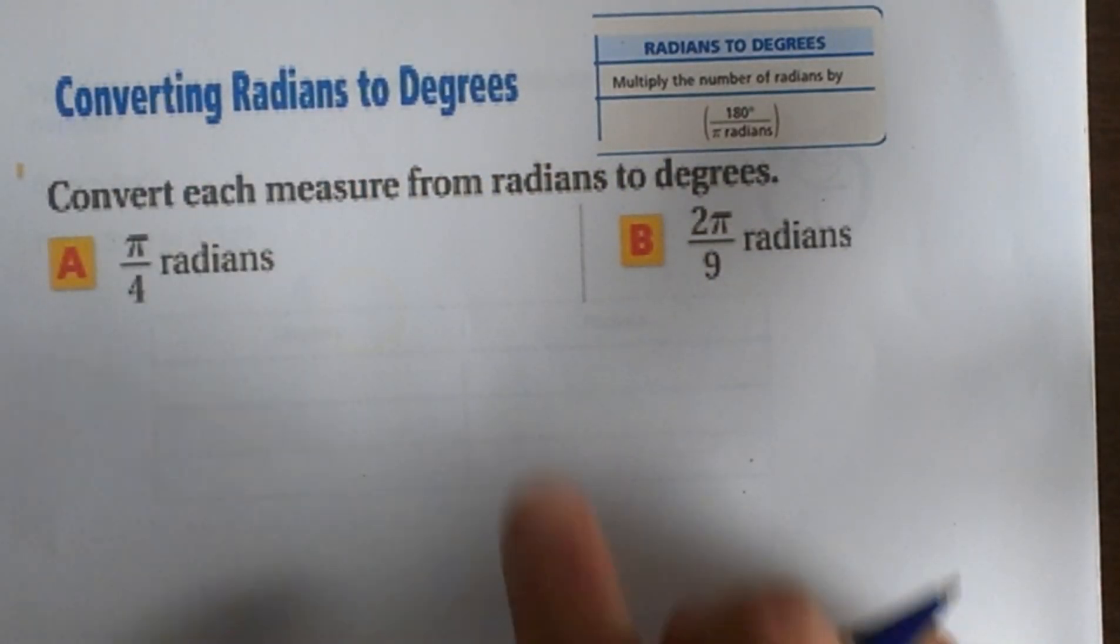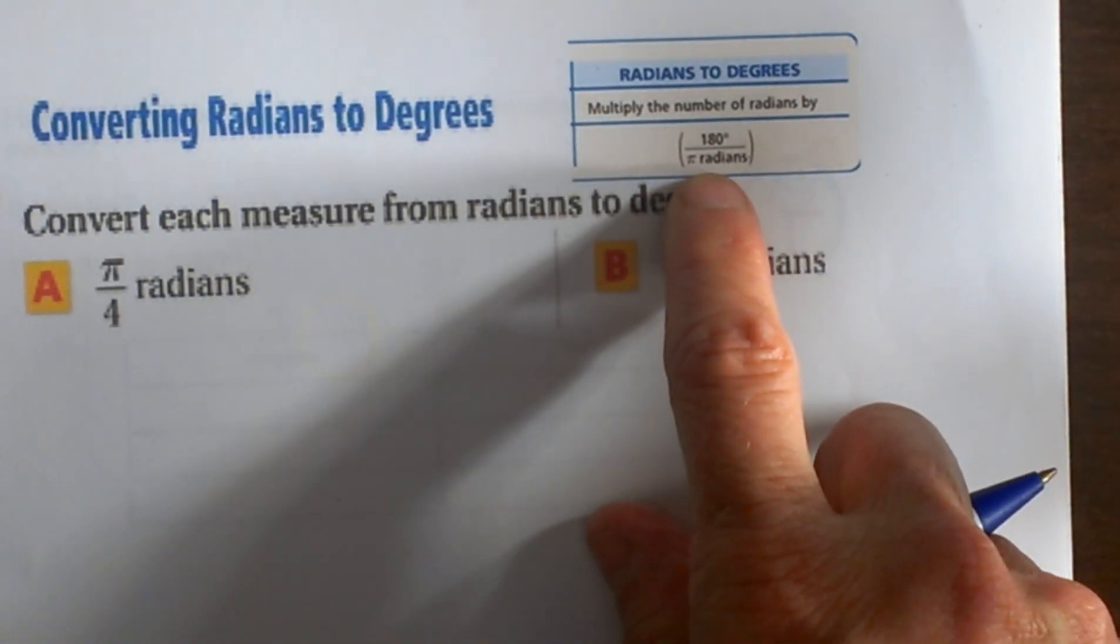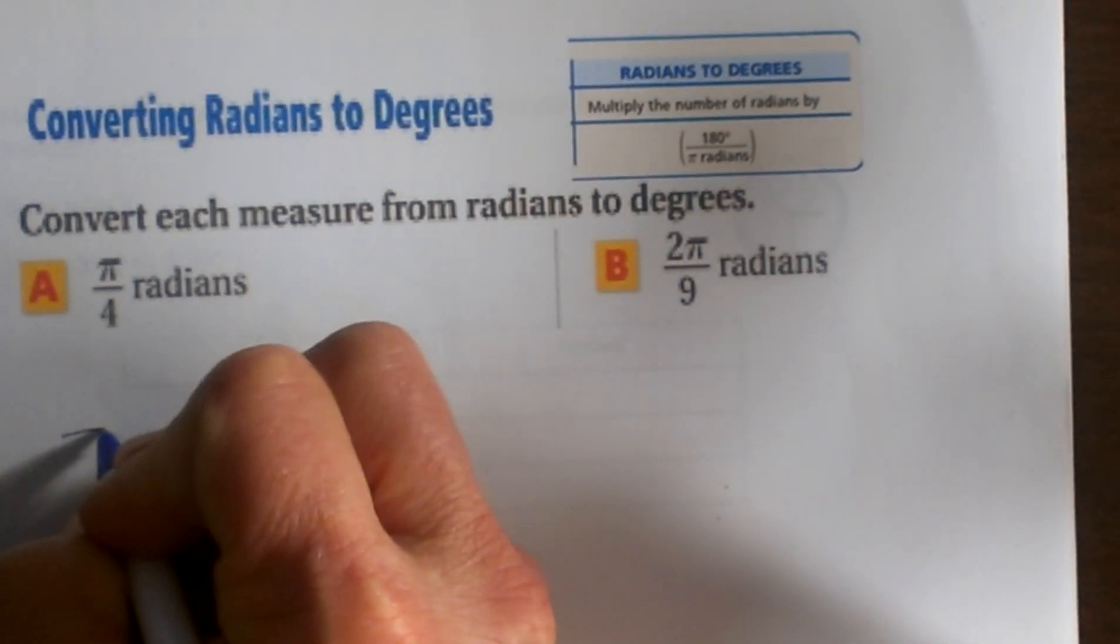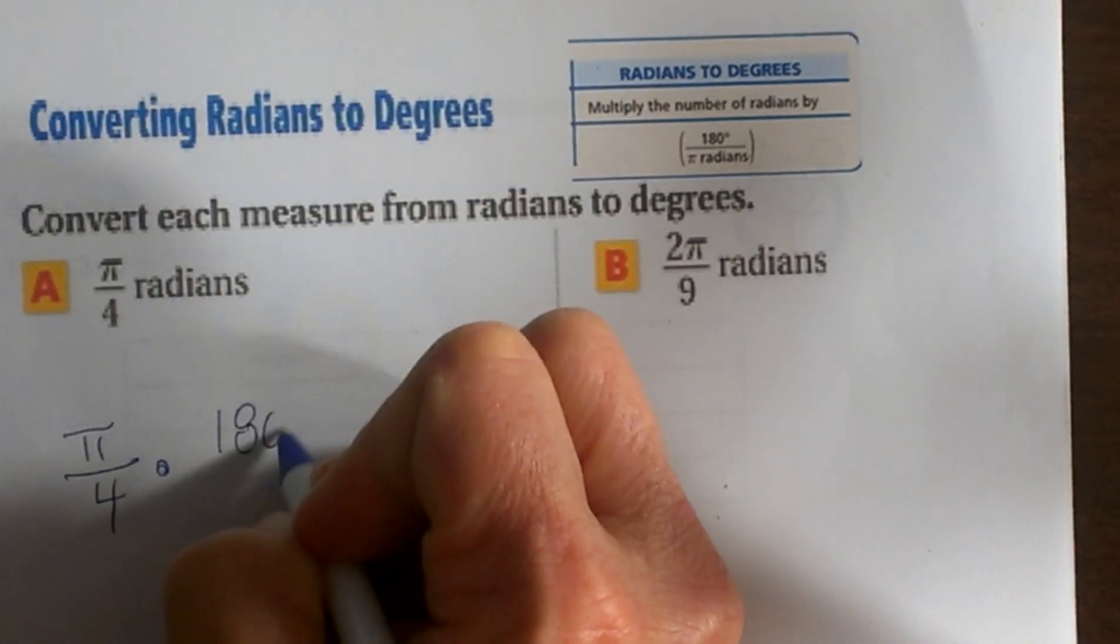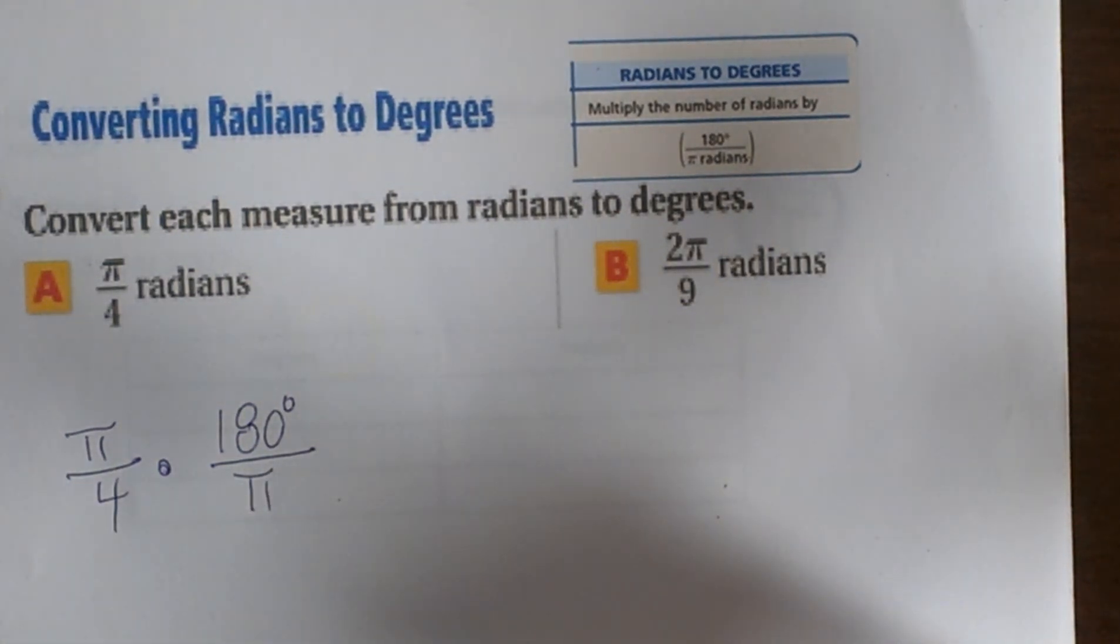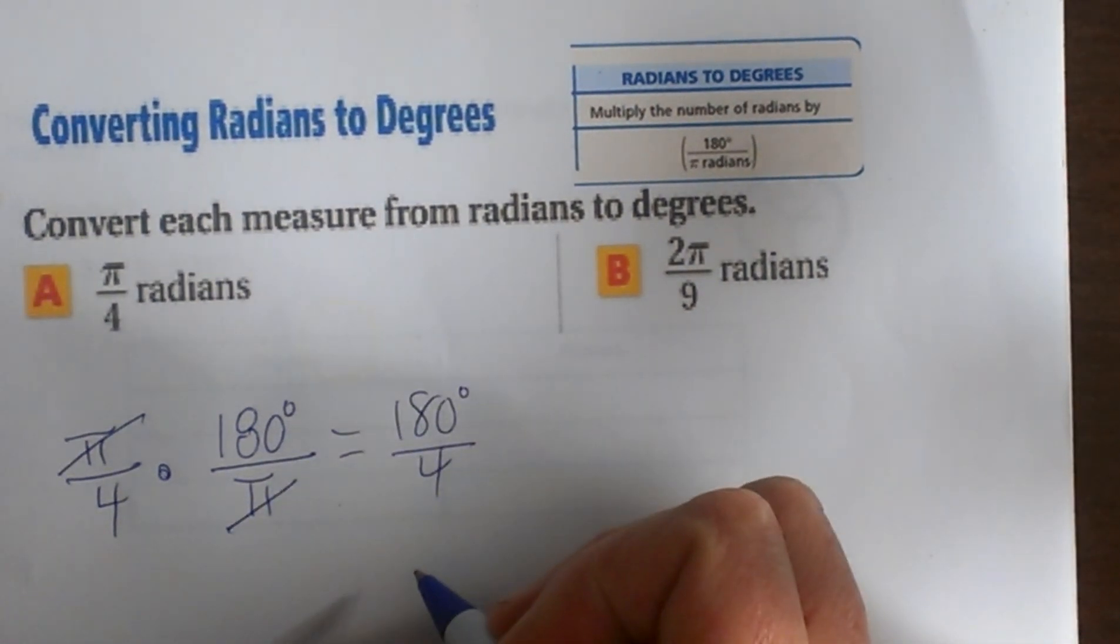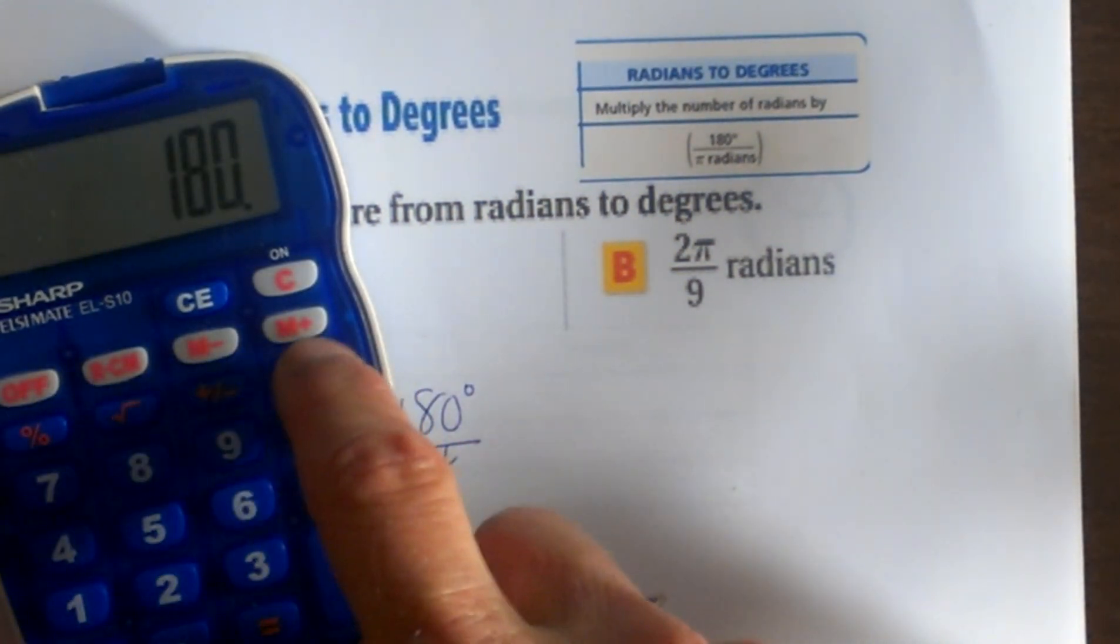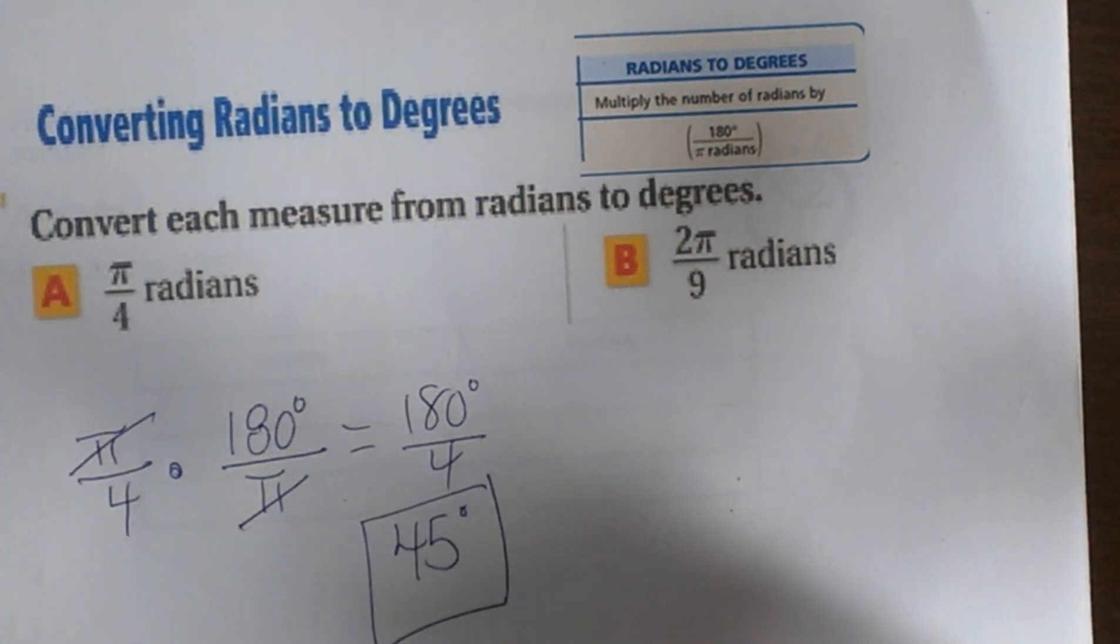Converting radians to degrees, we take that same ratio and flip it: 180 degrees over π radians. So π/4 times 180 over π—the πs cancel and you end up with 180 over 4. 180 divided by 4 should be 45, so 45 degrees is our answer.